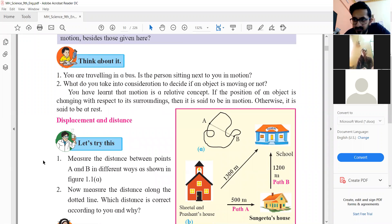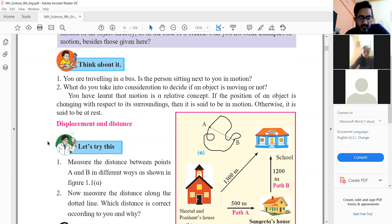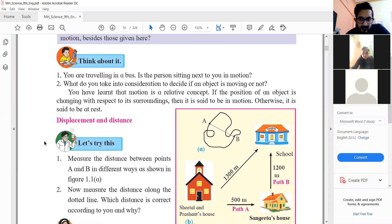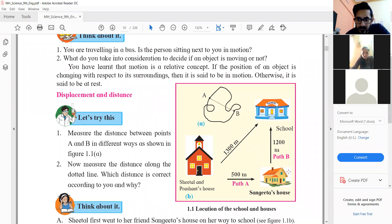So now we have covered the displacement distance. So in the textbook, it is also in the same way. As you think, you have a house of Shital and Prashant. And here, Sangeeta's house is also cool.